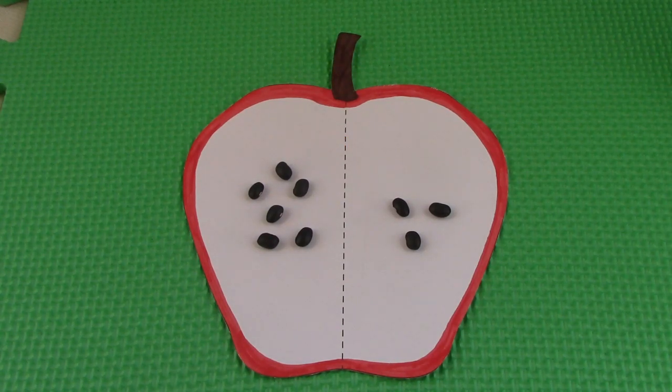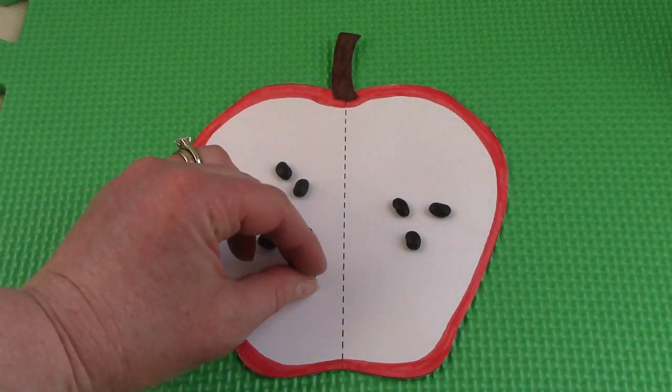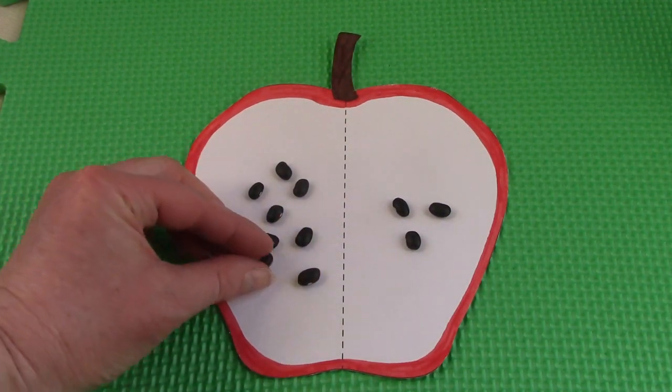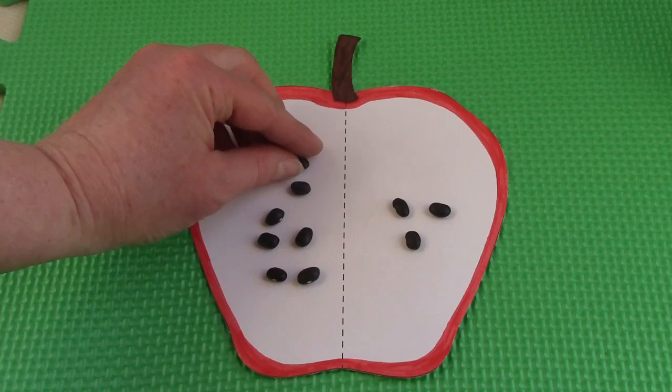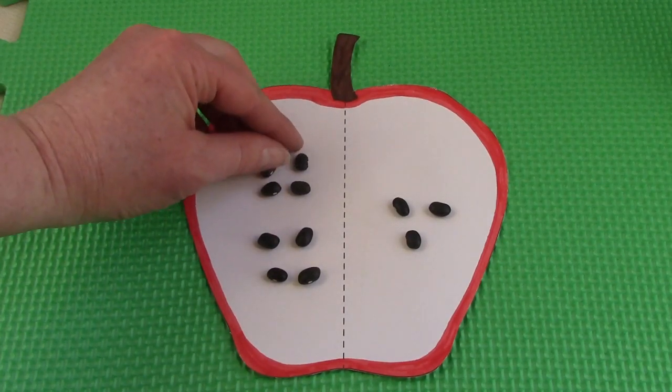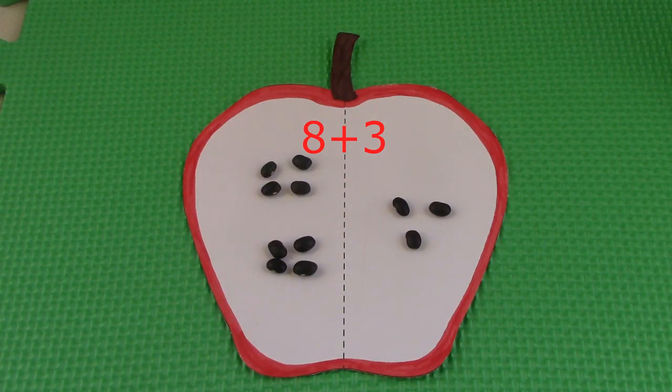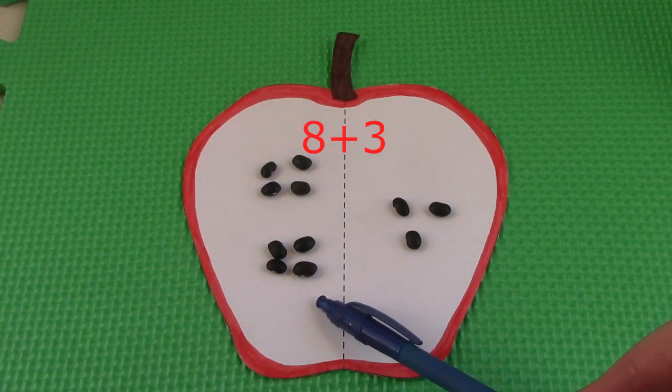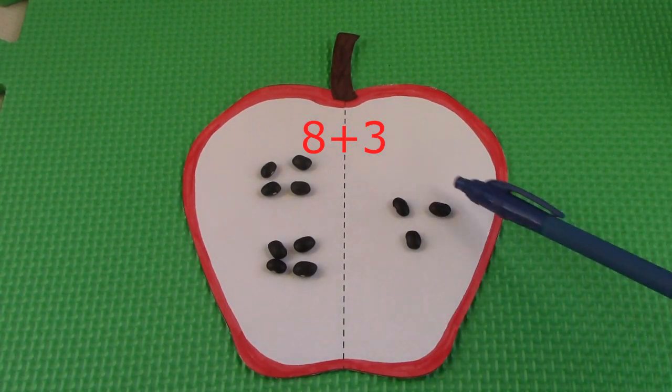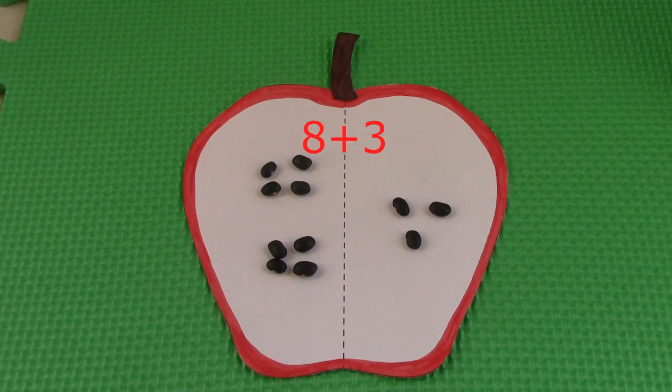One of the next facts that we're going to look at is 8 plus 3. I'm going to make it two little groups of 4 so we can look at it and remember that that's 8. 8 plus 3. Let's add on. 8, 9, 10, 11. 8 plus 3 is 11.